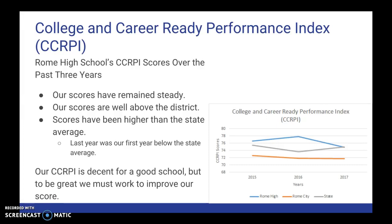Keep in mind that those other schools are elementary and middle schools, and their performance scores are graded a little differently than ours. As far as the state average, in 2015 and 2016 we were well above the state average, but in 2017 we dipped slightly below, largely due to different principals over the past two years and changes in teachers and retirements. Our CCRPI scores are decent, but here at Rome High School we want to be a great school, so we've got to work to improve those scores.